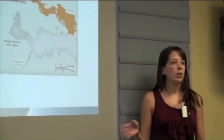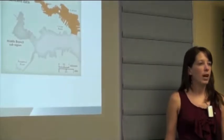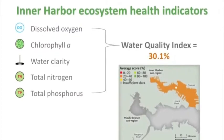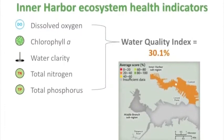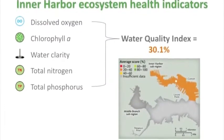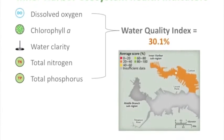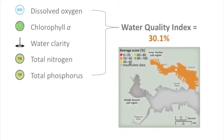So overall what we did is we scored these indicators and you just average them straight into a water quality index for the inner harbor region, and that was a 30.1%, which is a poor score - which makes sense with the different indicator scores. And then, like I said, the middle branch region did not have any data so we did not score that.